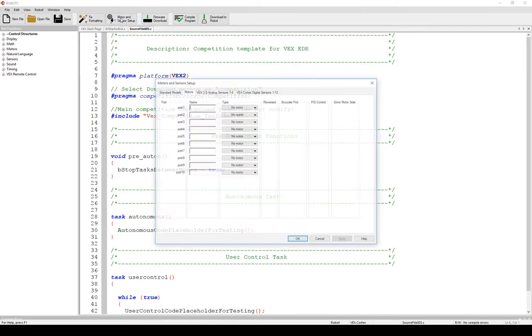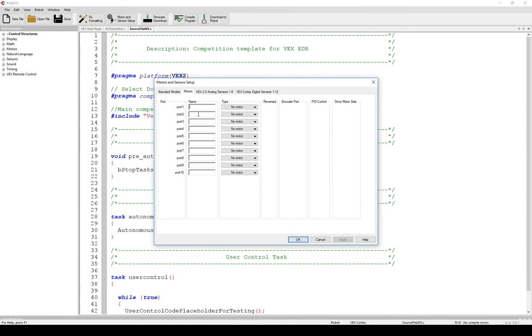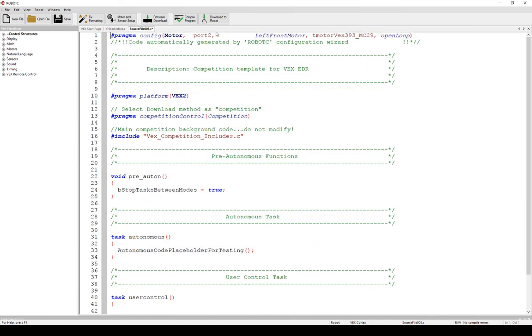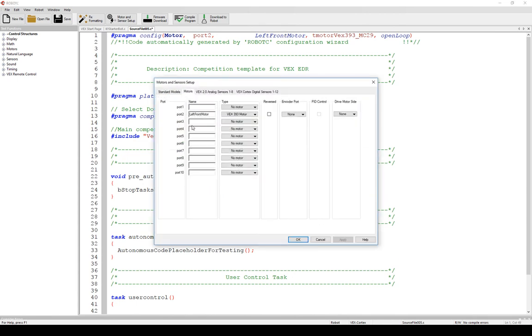I'm going to add in a three-wire motor here and type this in as left front motor, and select whether or not it's reversed. Select apply and it automatically develops this for me. If I need to go back into it, I can click there and it will open back up, which is really useful.